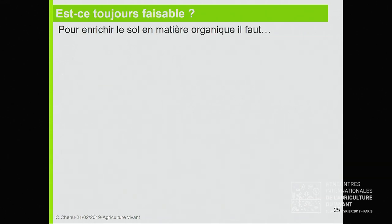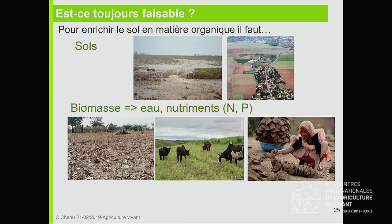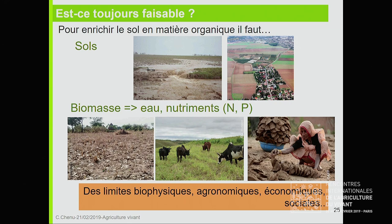Est-ce toujours faisable d'augmenter, de préserver la teneur en matière organique des sols ? Il faut des sols, déjà. On est dans un contexte d'aggravation des phénomènes d'érosion et d'une extension trop importante de l'artificialisation, donc de réduction des surfaces disponibles pour la culture, pour d'autres types de couverts végétaux, pour du stockage de carbone. Et puis, pour stocker et stabiliser des matières organiques, il faut de la biomasse, il faut de l'eau — c'est ce qui limite. Il faut des nutriments : la disponibilité de l'azote et du phosphore peut limiter la croissance de la biomasse. Il peut y avoir des compétitions d'autres usages — utiliser la biomasse pour les animaux, pour des usages domestiques. Donc des limites biophysiques, agronomiques, économiques et sociales.